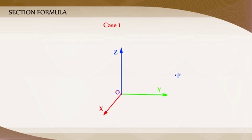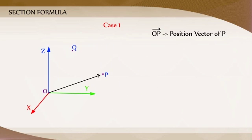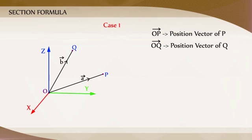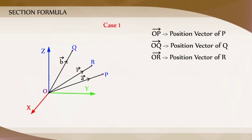Section Formula. Case 1: Let P and Q be any two points with position vectors OP and OQ. The point R with position vector OR, which divides the line segment joining the points PQ in the ratio M is to N, is given by the section formula.